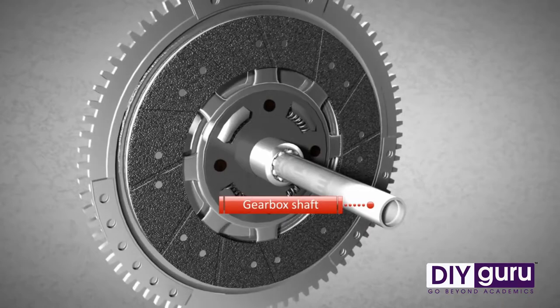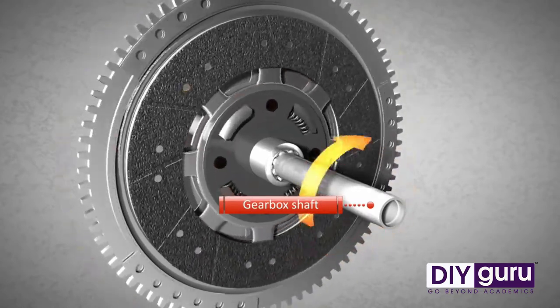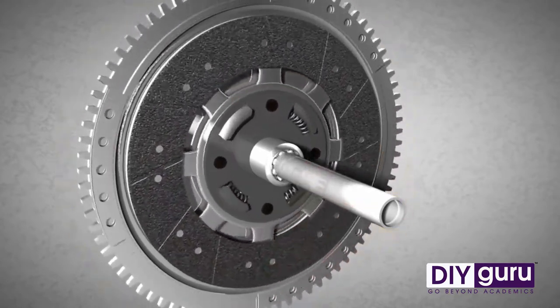The clutch disc is connected to the gearbox through the gearbox shaft. Consequently, the wheels of the vehicle only rotate when the flywheel is in contact with the clutch disc.